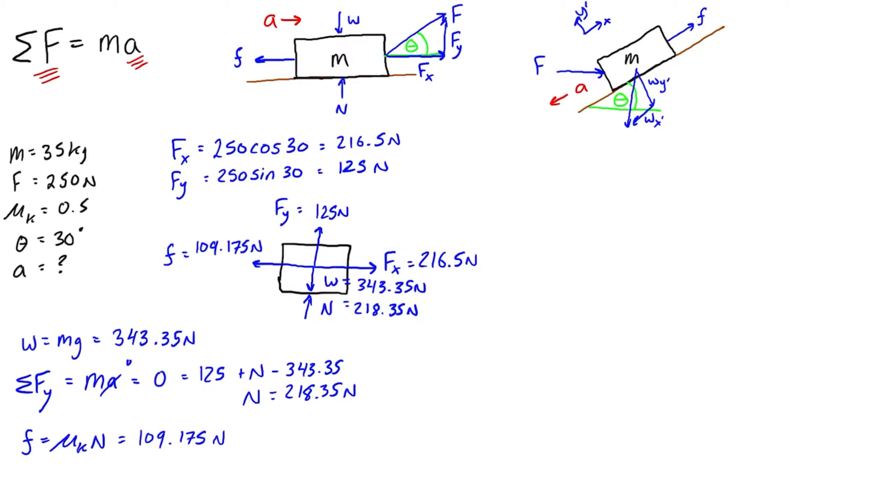So now when we're just going to look for what the acceleration of this mass is, the acceleration is definitely going to the right. The force imbalance you can see is fx is 216, the friction is 109, so in the horizontal direction there's an imbalance to the right. And in the vertical direction it would net out to zero, so acceleration is definitely to the right.